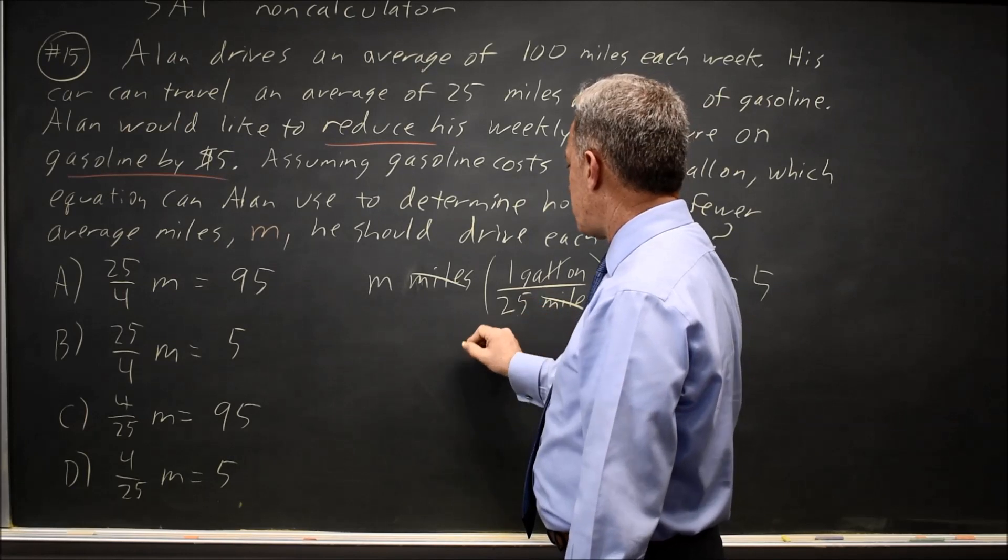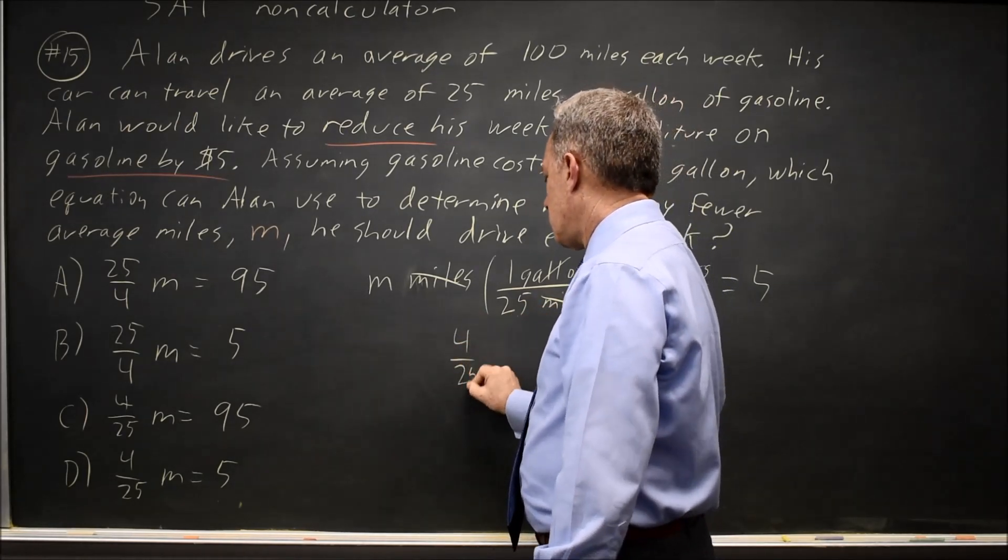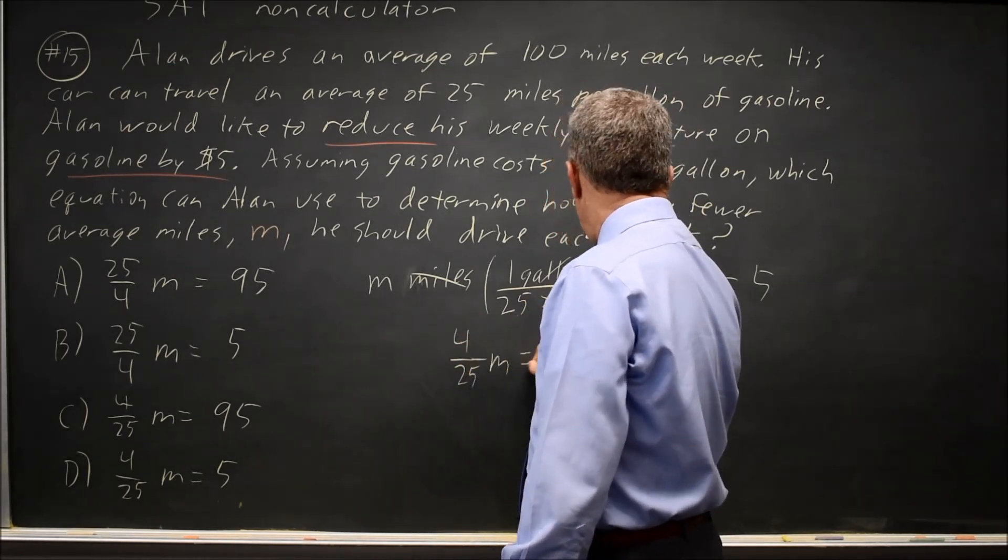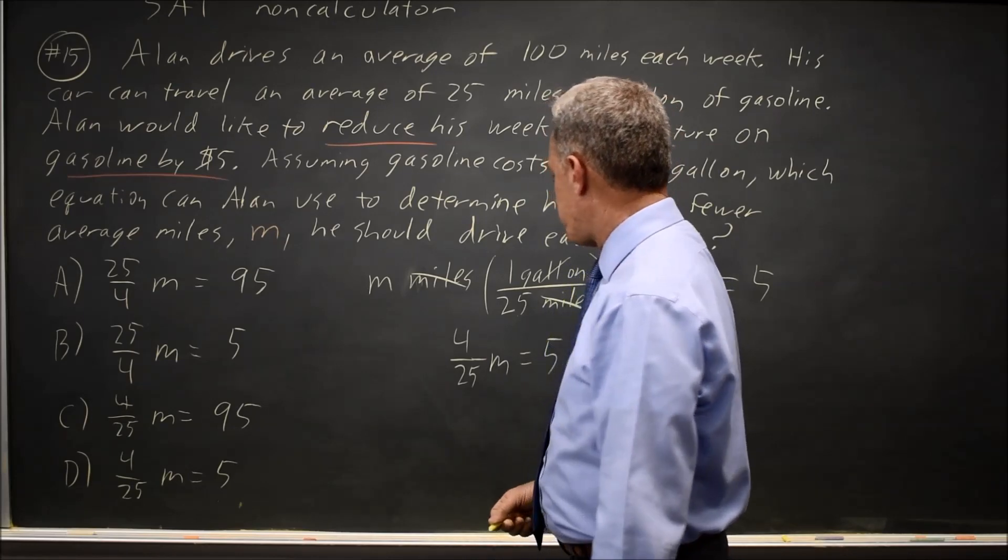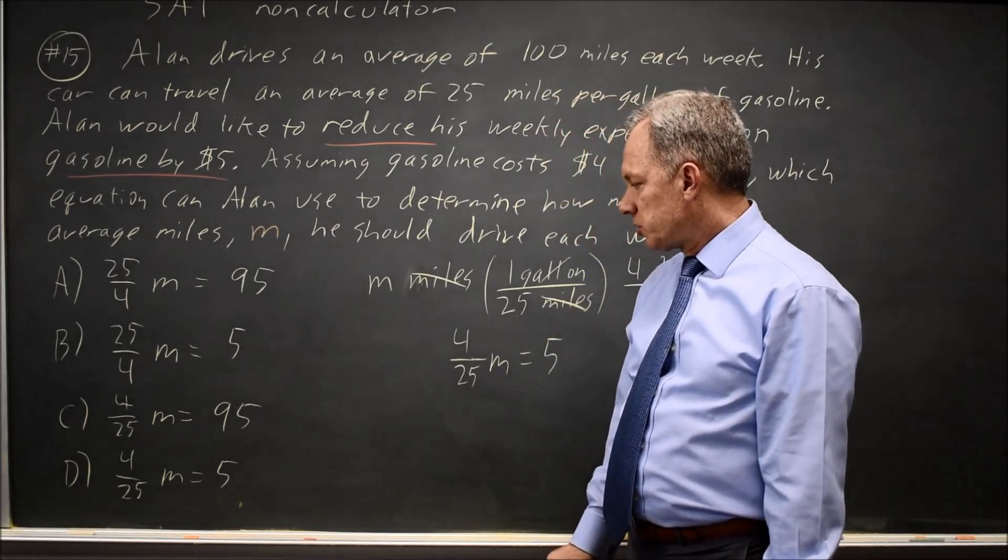Simplifying, this is four over 25 times M equals five. That would be choice D.